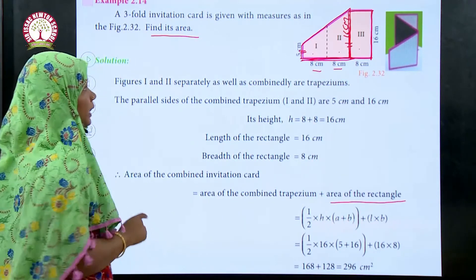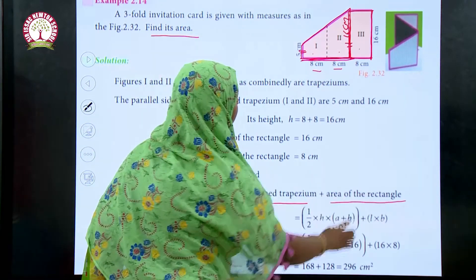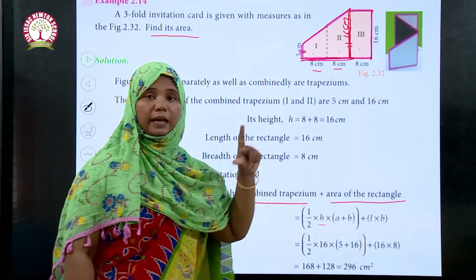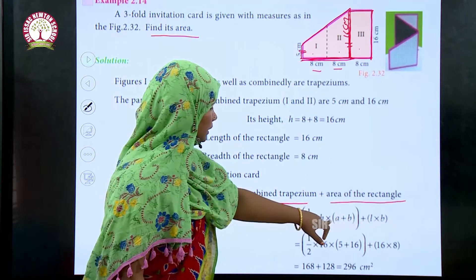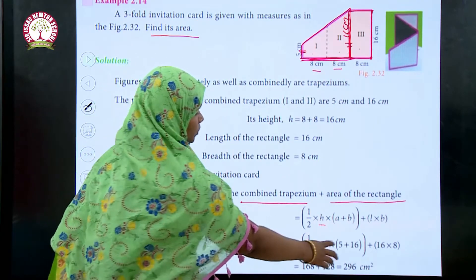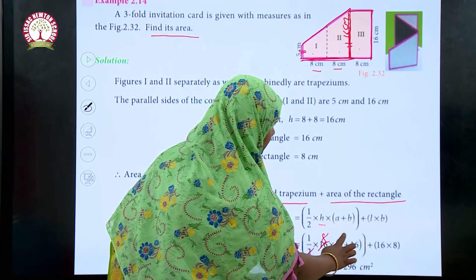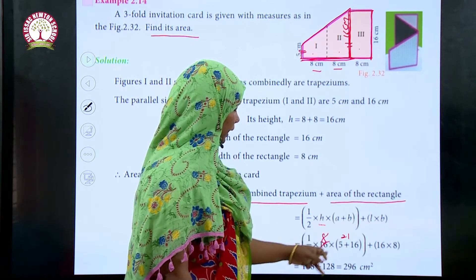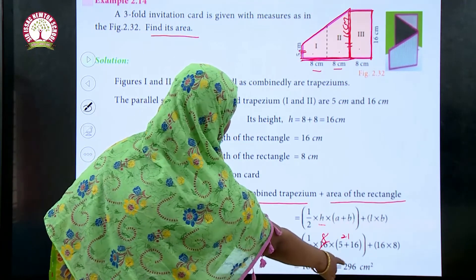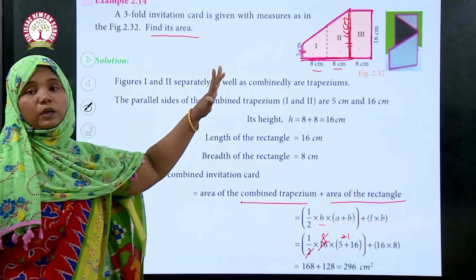The area of the combined card is area of the trapezium plus area of the rectangle. Area of trapezium is half times H times (A plus B): half times 16 times (5 plus 16) equals 8 times 21, which is 168. Area of the rectangle is 16 times 8, which is 128. Adding together: 168 plus 128 gives 296 centimeters squared as the total area of the threefold invitation card.